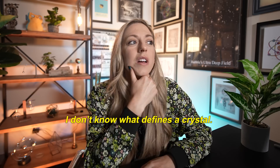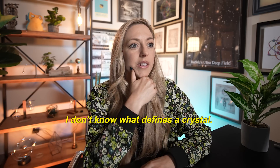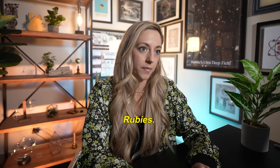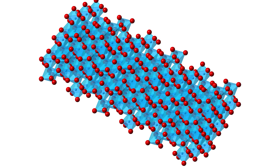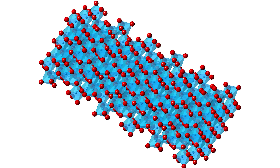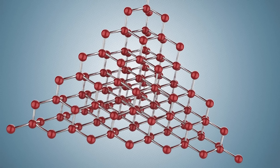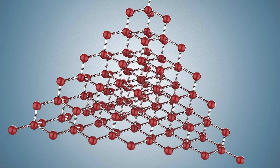Do you know what a crystal is? I don't know what defines a crystal. Give me an example. Rubies. So I'm looking up the atomic structure of rubies — it's repeating, it looks like tiles. The pattern is repeating in three dimensions. This is what diamond looks like.